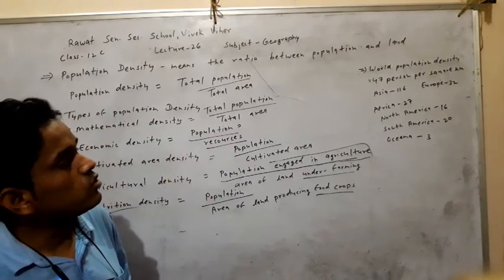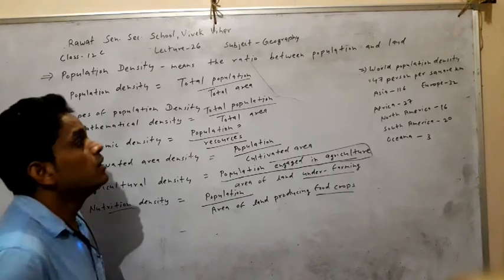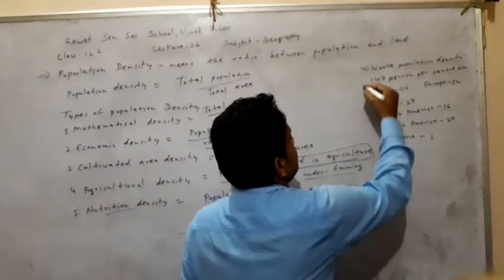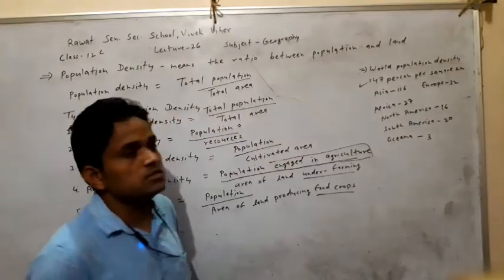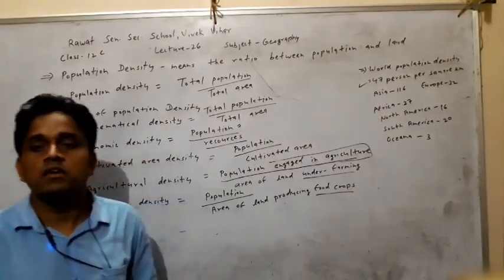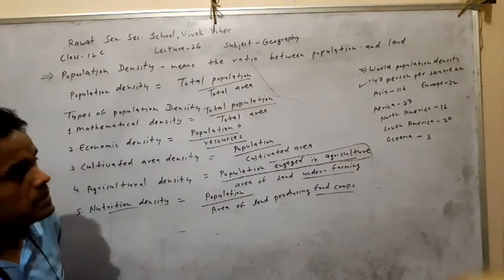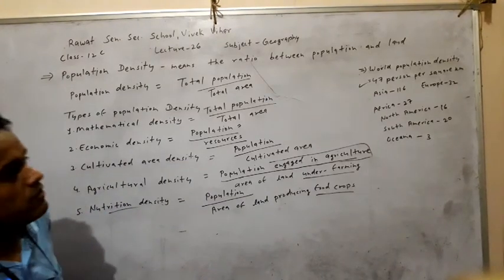Next, world population density. The world population density is 47 persons per square kilometer.